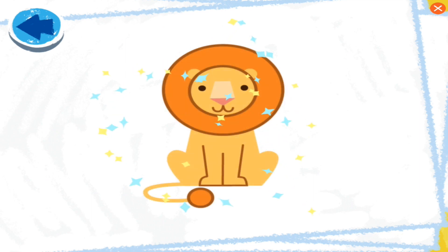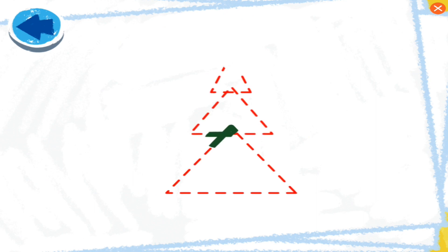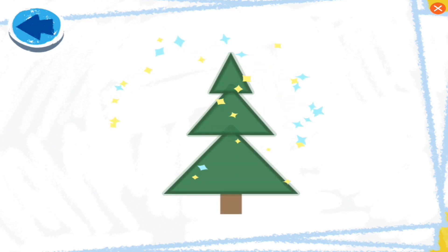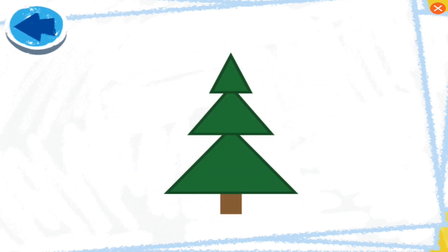This picture has rectangles. Boy, Elmo wonders what it is. This picture has triangles. Boy, Elmo wonders what it is. Elmo sees it's a pine tree.